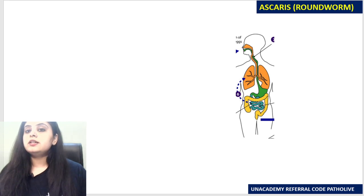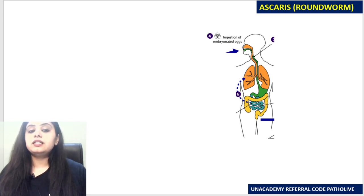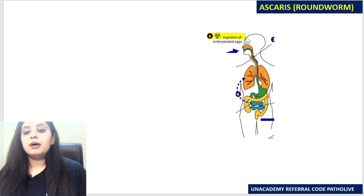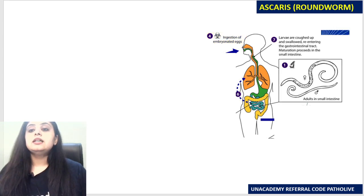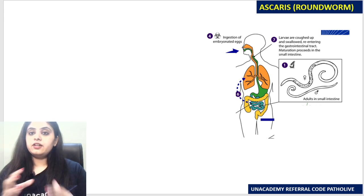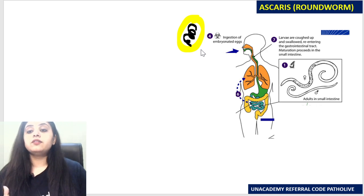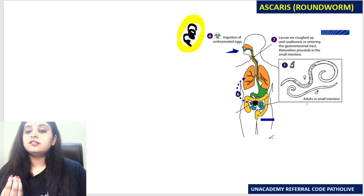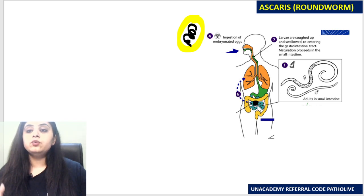The host here is humans. The first question is: how do we get the infection? We get the infection by the ingestion of embryonated eggs. Once the embryonated egg has entered our body — an embryonated egg contains a larva inside it — the larva is going to hatch out in the small intestine.